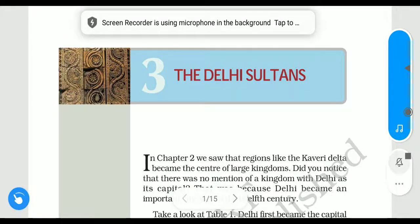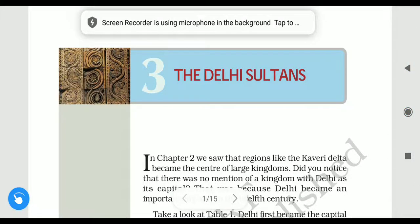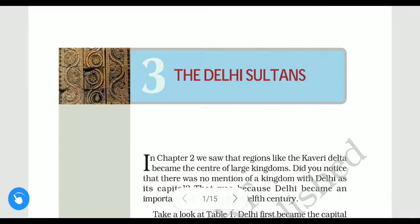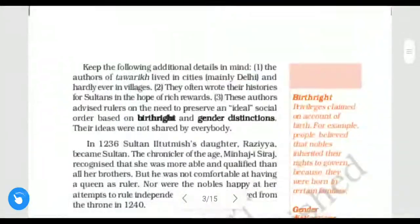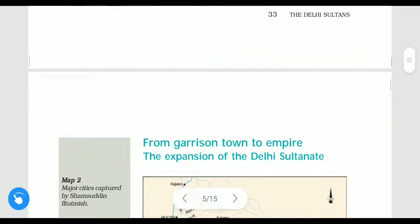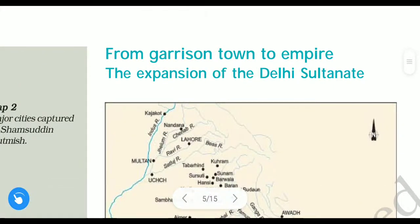This is the second video of the third chapter of History, which is about the Delhi Sultans. In the last video we covered up to a certain point, so let us continue further with our remaining chapter — 'From Garrison Town to Empire: The Expansion of the Delhi Sultanate.'